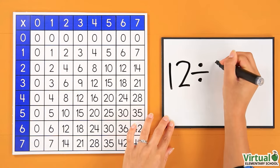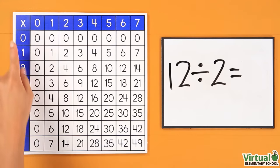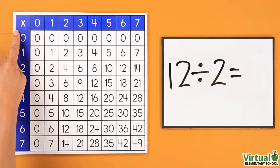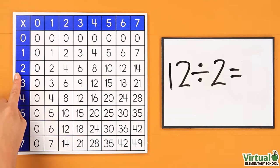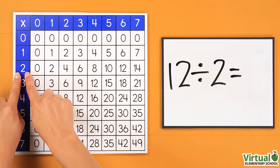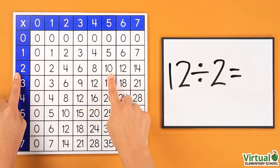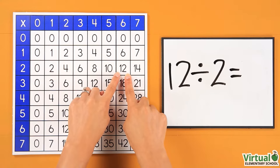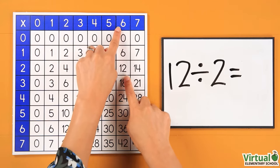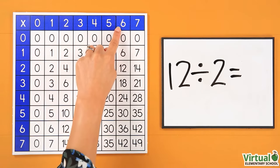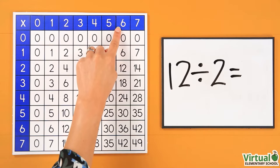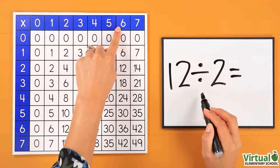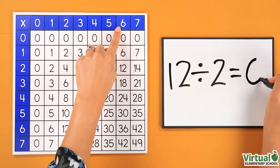What is 12 divided by 2? First, find the second number in the equation, 2, in the first column. Then, move across the row to the first number in the equation, 12. From 12, move up the column to the top number, 6. This is the answer. This means that 12 divided by 2 equals 6.